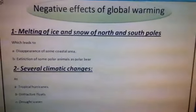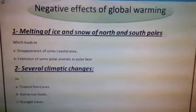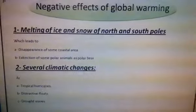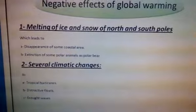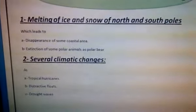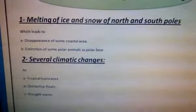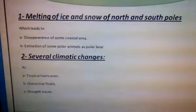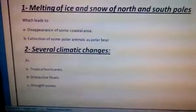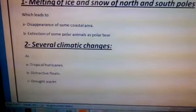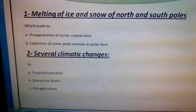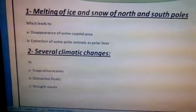But what are the negative effects of global warming? Number one, melting of ice and snow at the north and south poles, which leads to the disappearance of some coastal areas. Number two, extinction of some polar animals like the polar bear. Number three, it causes several climatic changes such as tropical hurricanes, destructive floods, rough waves, and forest fires.